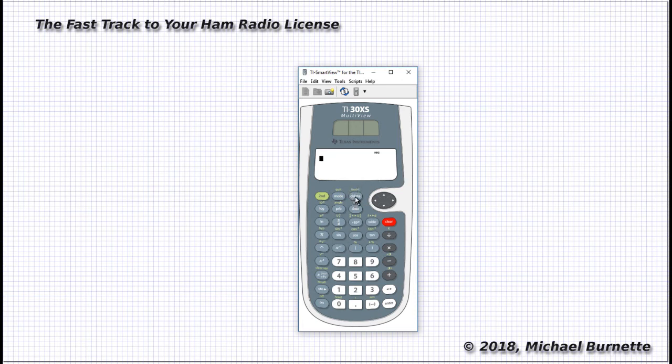Next to the MODE key is the DELETE key. That one lets you correct any mistakes you've made entering your values without having to just nuke everything and start over. To the right of the DELETE key is another important one. That's that CURSOR MOVEMENT key. It's this oval key right here. And it moves the cursor left, right, up, or down.